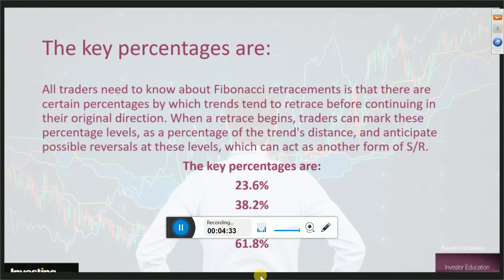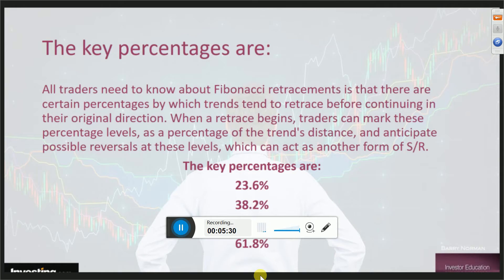The key percentages traders need to know about Fibonacci retracements are that there are certain percentages by which trends tend to retrace before continuing in their original direction. When a retrace begins, traders can mark these levels as a percentage of the trend's distance and anticipate possible reversals. The key levels are 23.6, 38.2, 50, and 61.8. These are the most important levels when applying to Forex, currency, or commodities trading on a chart.